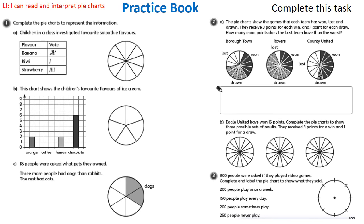Let's have a look at the practice book. Question one: complete pie charts to represent information. On A, children in a class investigated favourite smoothie flavours. We have three types of flavour. Banana had five votes, kiwi is one, and strawberry is four. So the total number of people that voted is 10. Let's see how many sections our pie chart has been split into — it has ten sections. So we know that one section represents one vote.